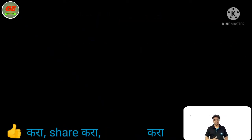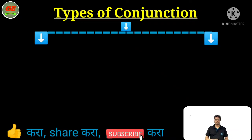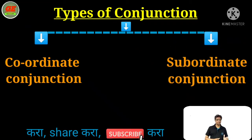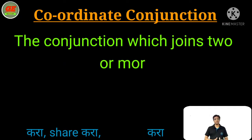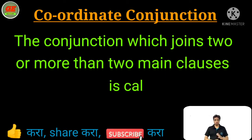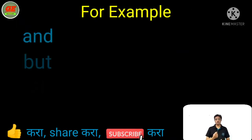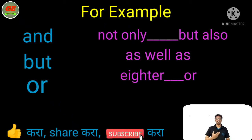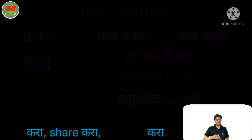Before seeing what compound and complex sentences are, we should know one more thing — two types of conjunctions. First is coordinate conjunction and second is subordinate conjunction. The conjunction which joins two main clauses or more than two main clauses is a coordinate conjunction. For example: and, but, or, not only but also, as well as, either or, neither nor, etc.